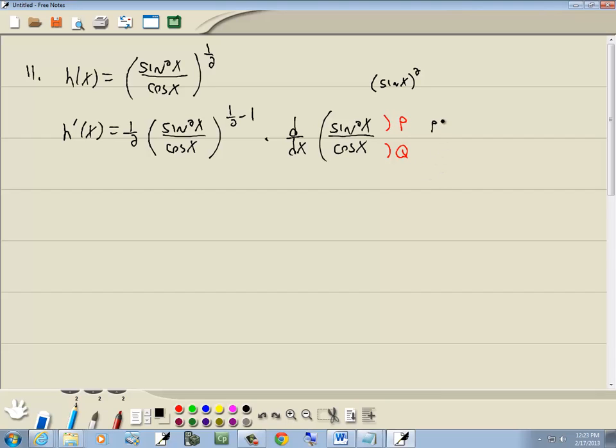So for p prime, we'll take our power, put it out in front. What's inside the parentheses remains as is. Lower our power by 1. And then you multiply it times the derivative of what's inside the parentheses. And the derivative of a sine is cosine.